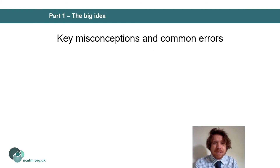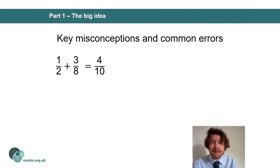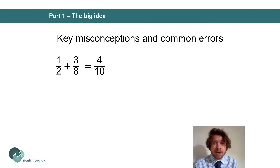A common issue is where students simply attempt to add their numerators and add their denominators, regardless of the values. A common incorrect answer for one half plus three eighths would be four tenths, because one plus three equals four and two plus eight equals ten. This is often attempted by students before we have discussions about unitization and the reasons why we can't simply add the numerators and denominators together.